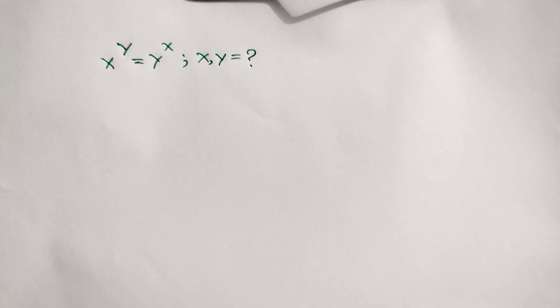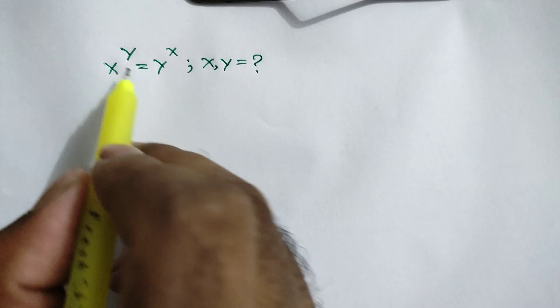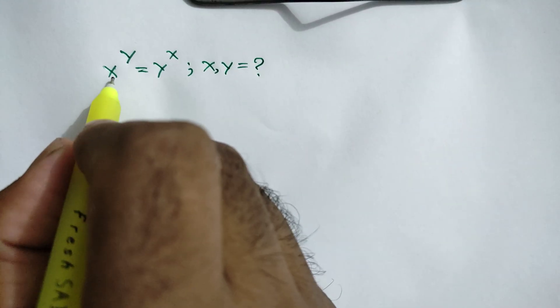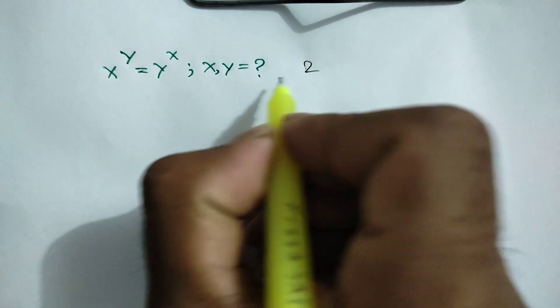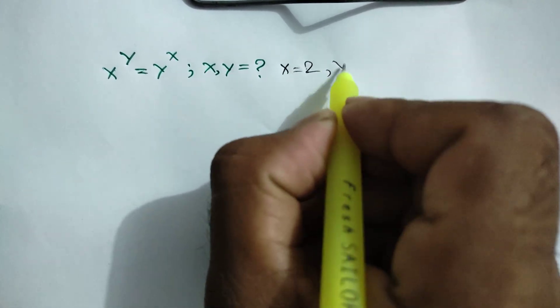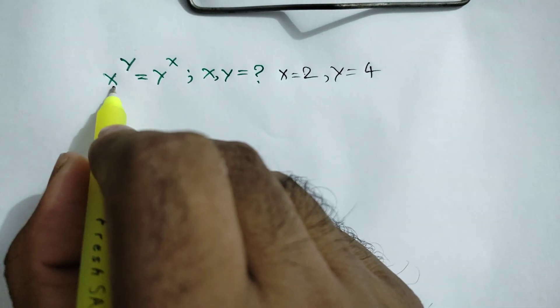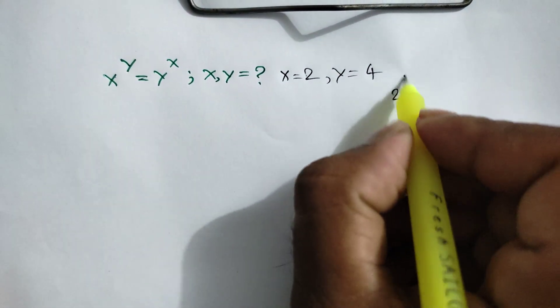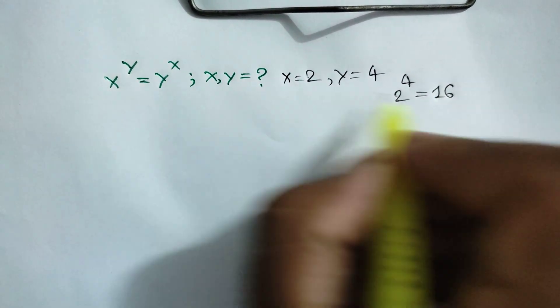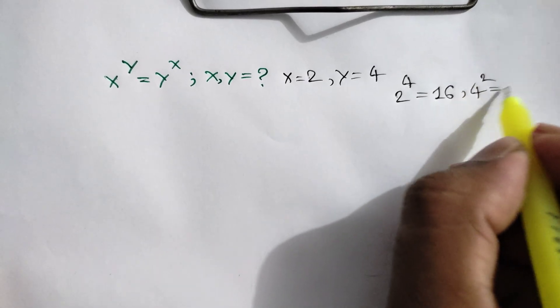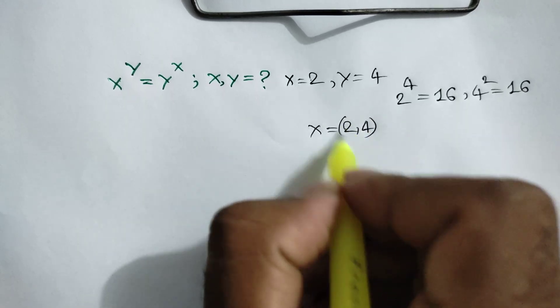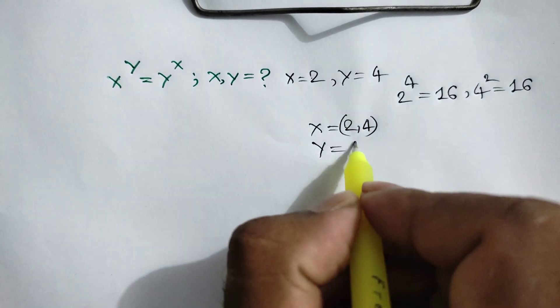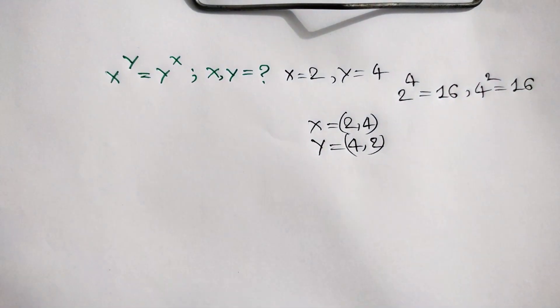Hi everyone. In this video I am going to show how to find the value of x and y where x to the power y is equal to y to the power x. Simply, let x be equal to 2 and y equal to 4. So we will get 2 to the power 4 is equal to 16, and 4 squared is equal to 16. So we can write x is equal to 2 or 4, and y is equal to 4 or 2.